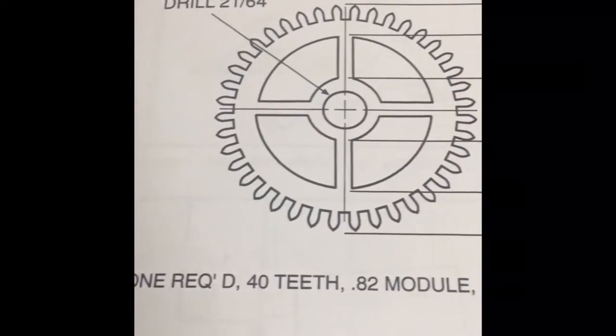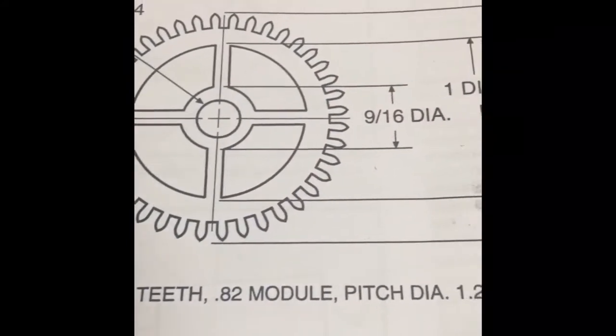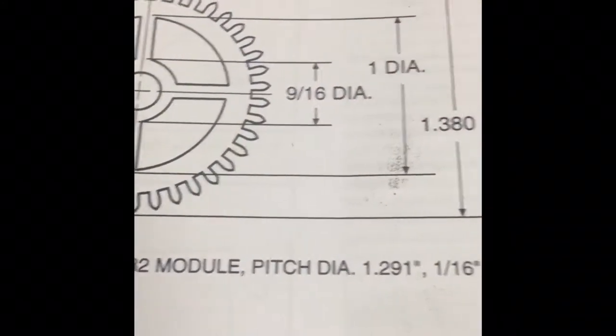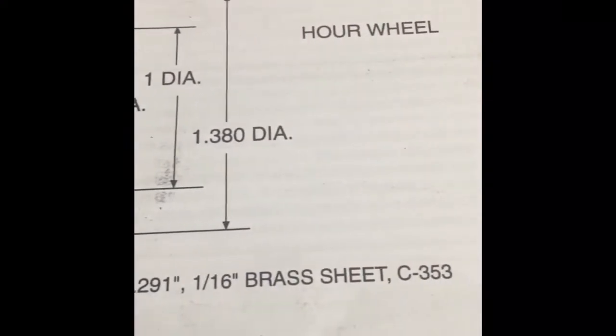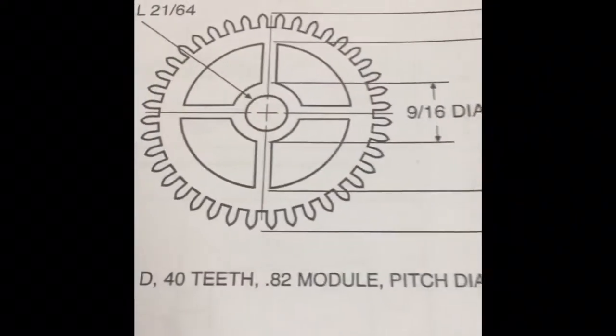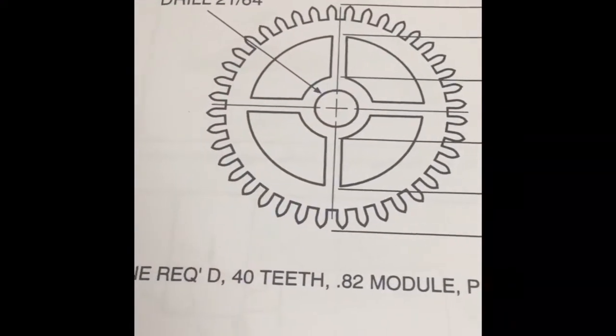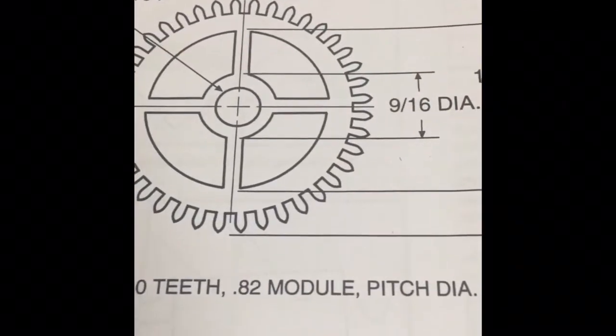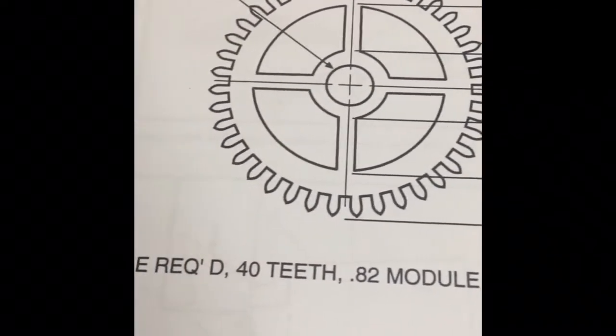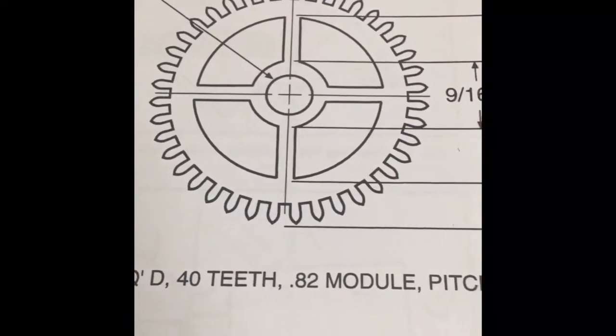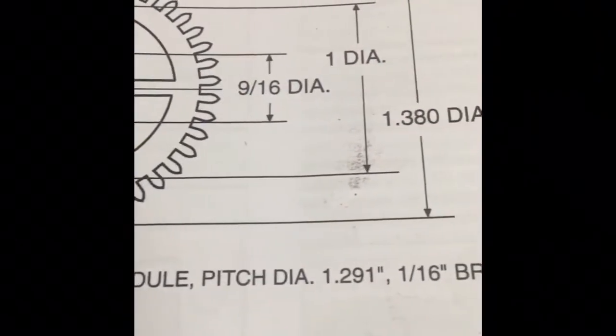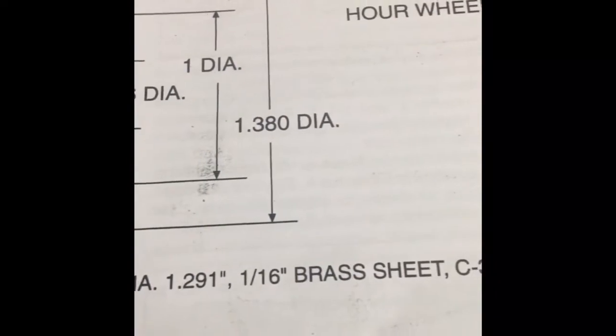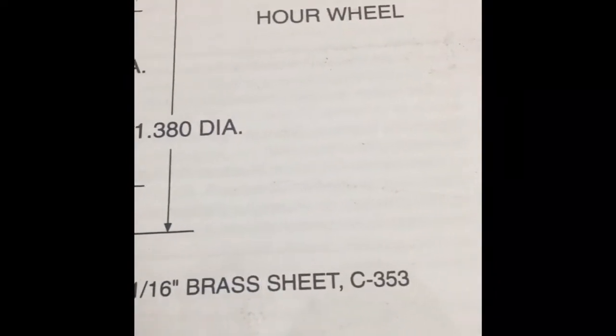This is the wheel I'm going to be making for my test. It's a 40-tooth wheel. I'm going to go through the whole process of getting the blank ready, putting it onto the fixture, and cutting the teeth.